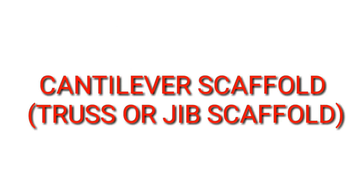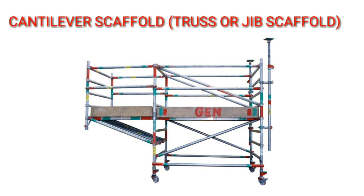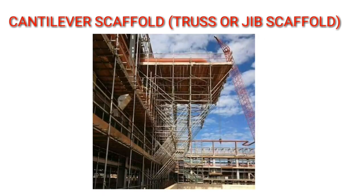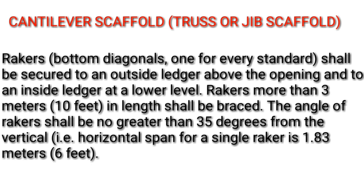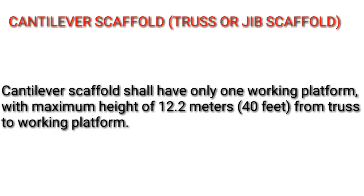Cantilever scaffold, truss or jib scaffold. Bottom diagonals (1 for every standard) shall be secured to an outside ledger above the opening and to an inside ledger at a lower level. Rakers more than 3 meters (10 feet) in length shall be braced. The angle of rakers shall be no greater than 35 degrees from the vertical. The span for a single raker is 1.83 meters (6 feet). Cantilever scaffold shall have only one working platform, with a maximum height of 12.2 meters (40 feet) from truss to working platform.